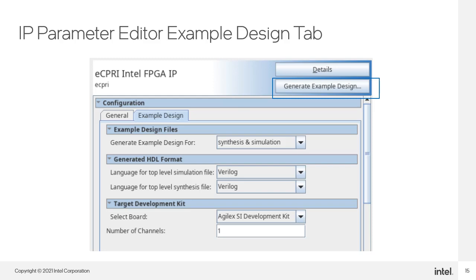To create the design example, in the parameter editor, go to the design example tab. There, you can specify if you want a design for synthesis only, simulation only, or both. Select the target design language — either Verilog or VHDL. Then select the development kit and the number of channels you want to test, again up to 4. Choosing a development kit means the design example will be generated with the right target device, device pins, and any other necessary hardware constraints set for you. If you select none, you'll still get the design example, but you must manually assign pins and set any of those other constraints.